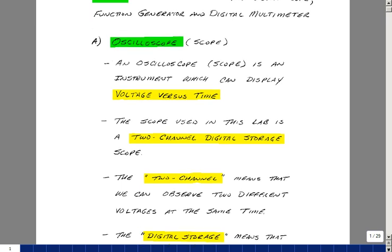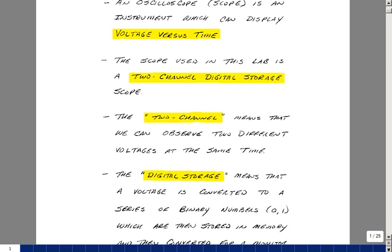The scope that we are using in lab is a two-channel digital storage scope, and by two-channel we mean that we can observe two different voltages at the same time.